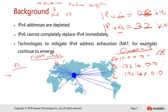Class B starts from 172.16.0.0 to 172.31.255.255, and it has a forward slash of /16. Why 16? Because the first two octets represent the network ID, making the network 16 bits.